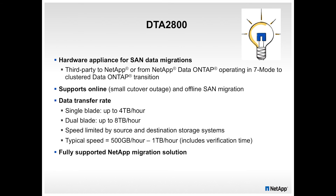The DTA 2800 is for SAN migrations. It's a tap-type device that will tap in and copy LUNs in the background and then do near-online cutovers. We don't use this as much with version 8.3 now because it supports SAN migrations natively, but this is a very fast way with minimal downtime to do upgrades. It's a QLogic OEM that NetApp has.